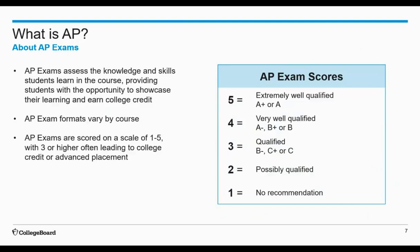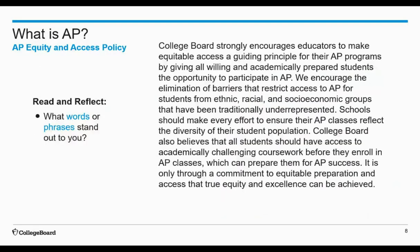Regardless of the exam format, every AP exam is scored on a one-to-five scale. While colleges and universities are responsible for setting their own credit and placement policies, AP scores each correspond to a recommendation — for example, 'qualified' or 'very well qualified' — signifying how qualified students are to receive college credit and/or placement. There is no failing an AP exam, but a score of three, 'qualified,' is often the starting point for awarding college credit.